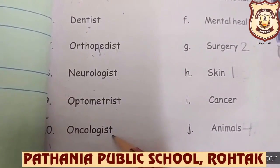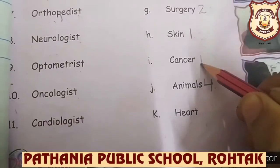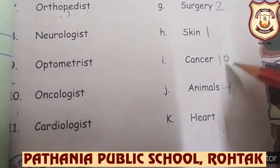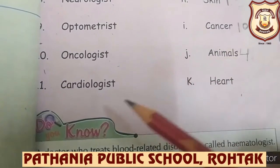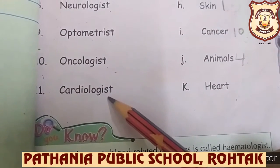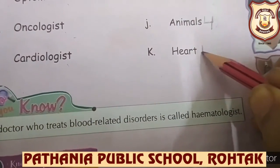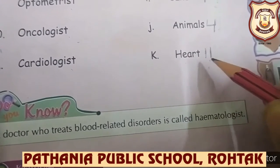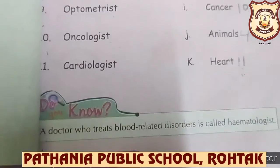Number ten: Oncologist. An oncologist treats cancer — which is a major disease. Number eleven: Cardiologist. A cardiologist treats all problems related to the heart. So in front of 'heart,' you have to write number eleven.